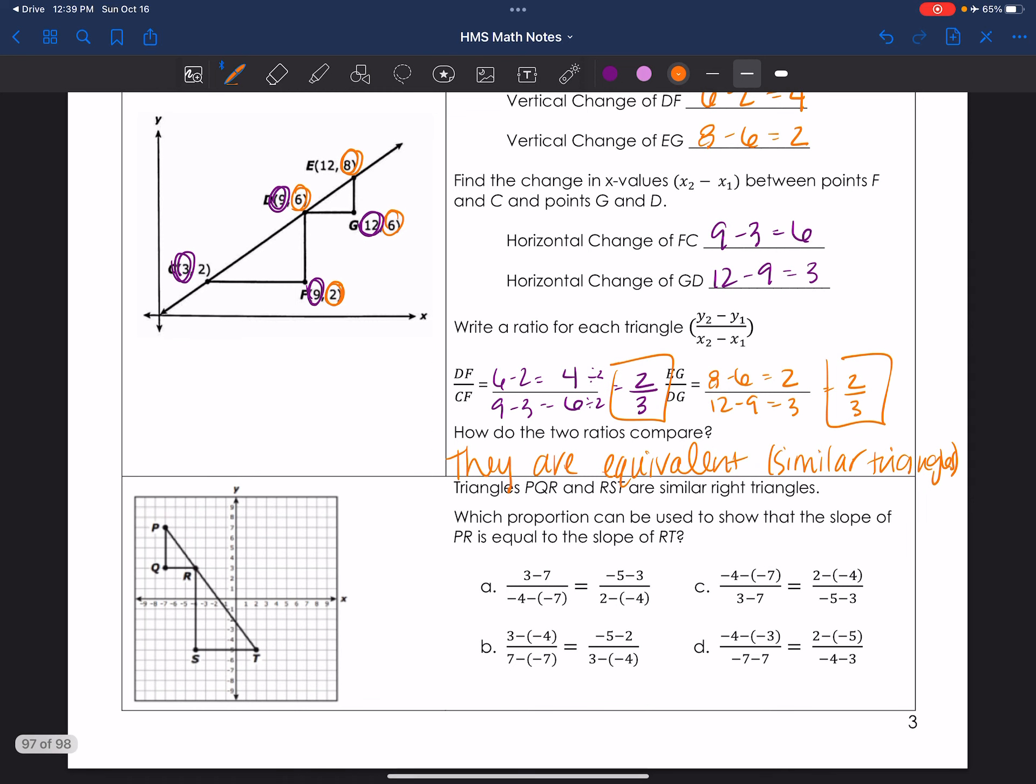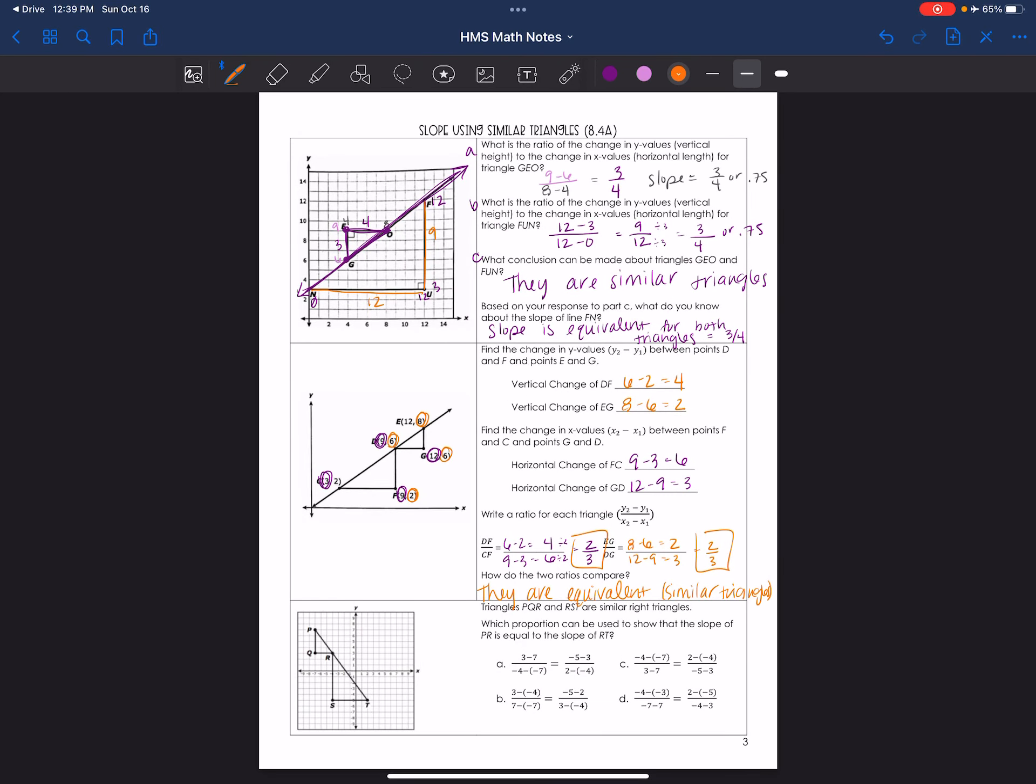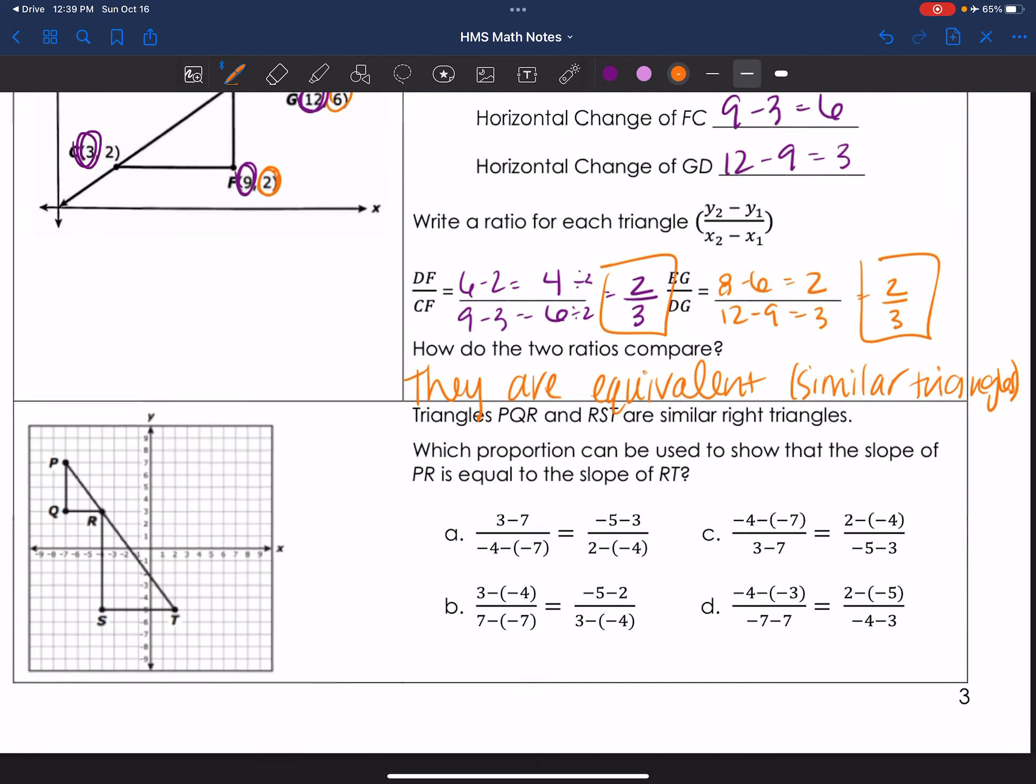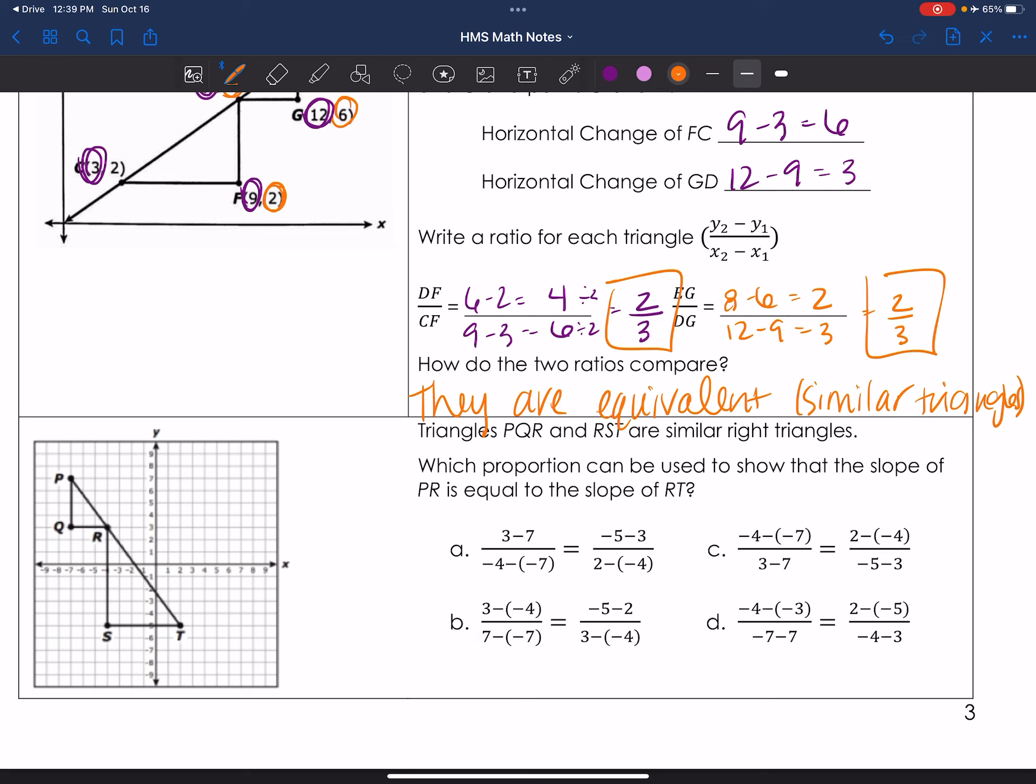Alright. Last example. And so far, I feel like we're cruising. We're doing well. Alright. This time, they did give us a grid, which is kind of beautiful. But I am going to pull out the ordered pairs, because I do feel like that was slightly easier. So the ordered pair for P, let me use a color we can see. Orange, I feel like it's good. P is negative 7, 7. Q is negative 7, 3. R is negative 4, 3. S is negative 4, negative 5. And T is 2, negative 5.